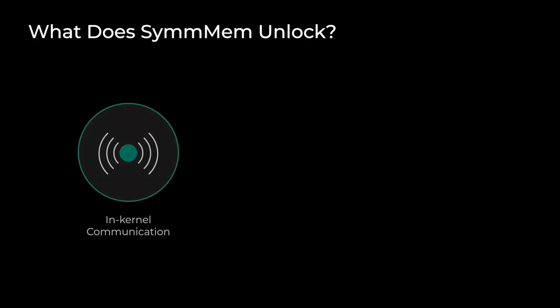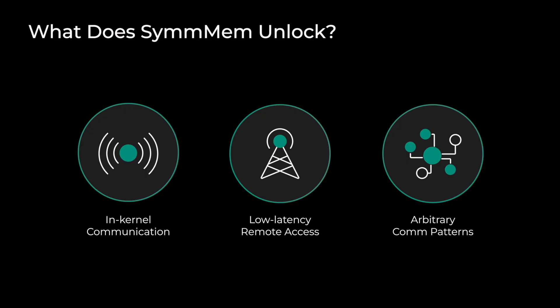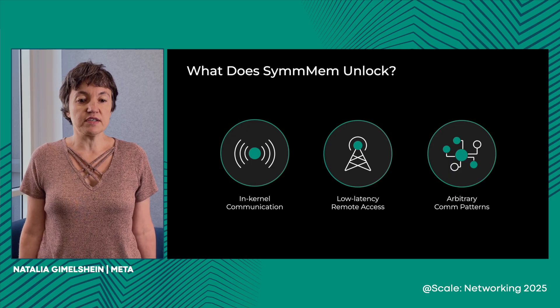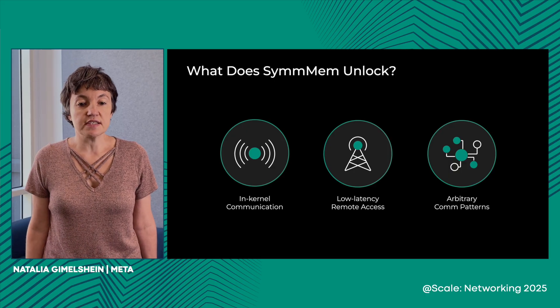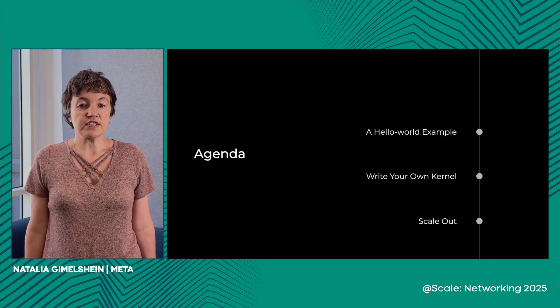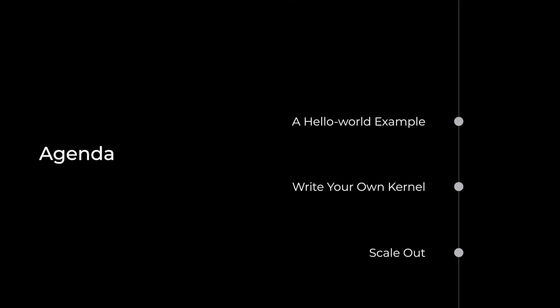With solving these challenges, the gain is huge. So, what previously unavailable capabilities does symmetric memory unlock? It's based on remote direct memory access, providing low latency and high bandwidth communications. Workloads where low latency is important will benefit from symmetric memory immediately. It's in-kernel initiated, so you can write kernels that interleave communication and computation, improving performance by limiting the number of memory accesses. And since it's a developer tool, developers can write truly arbitrary communication patterns not currently available in existing libraries. For the rest of this talk, we'll cover how to use symmetric memory in PyTorch, how to write your own kernel, and how we scale out with symmetric memory.